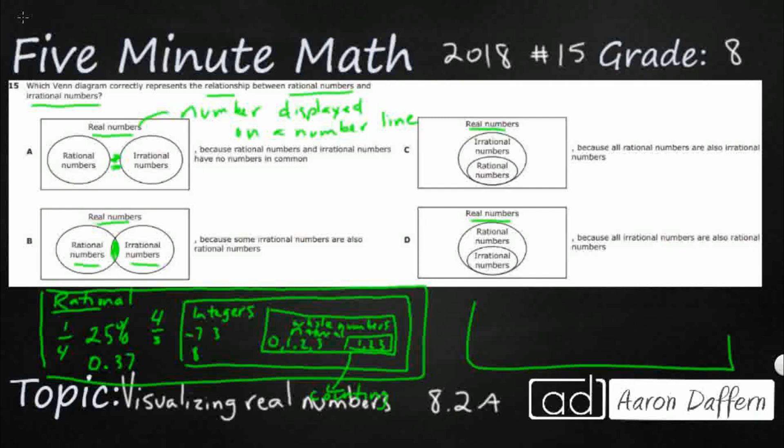Now, your irrational numbers are numbers that cannot be shown as a ratio. So, pi, square root of 2, things like that. And you know what? Look at how I showed them. They do not interact. There's no overlap between the two because these cannot be shown as a ratio. They're opposites, which means our answer here is going to be A.